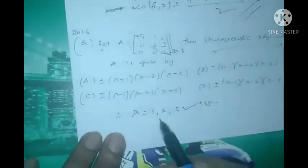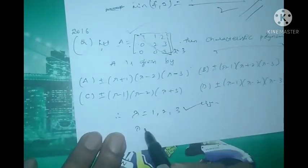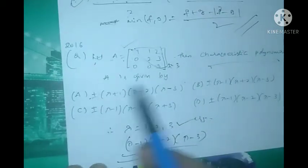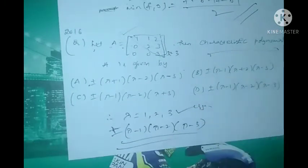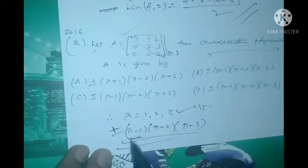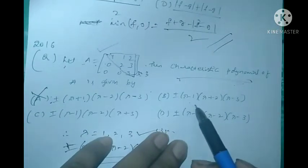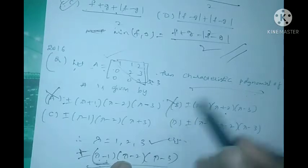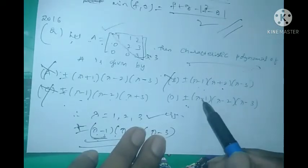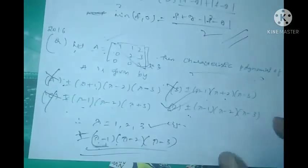Therefore the eigenvalues of matrix A are λ = 1, 2, 3. This can be solved within one or two minutes. The characteristic polynomial is (λ − 1)(λ − 2)(λ − 3). Checking the options: option A has (λ + 1) — wrong; option B has (λ + 2) — wrong; option C has (λ + 3) — wrong. Option D, ±(λ − 1)(λ − 2)(λ − 3), is the correct answer.